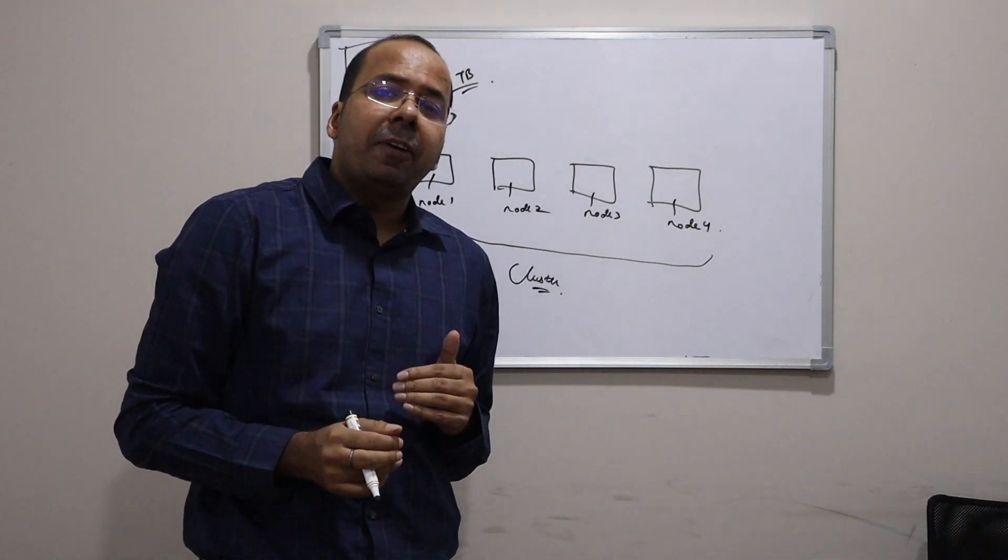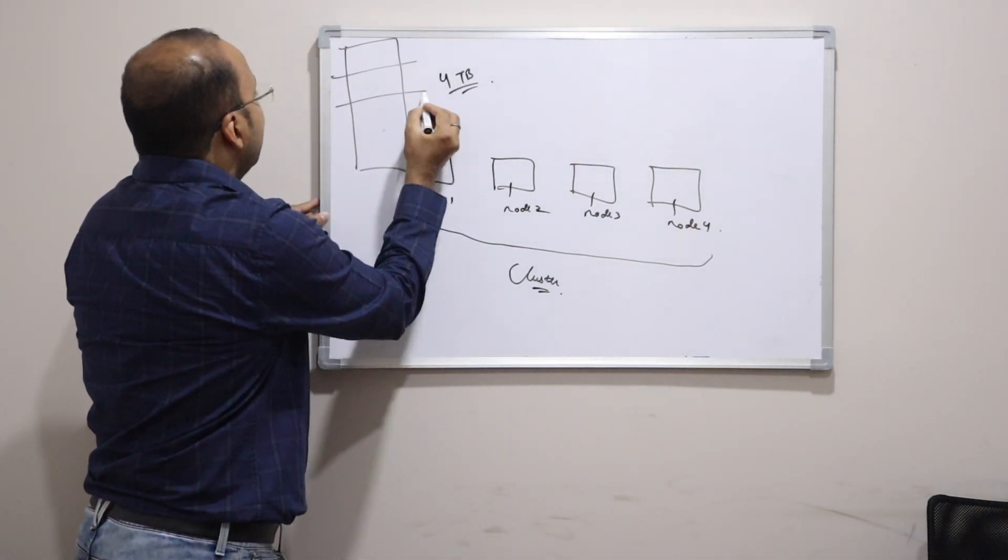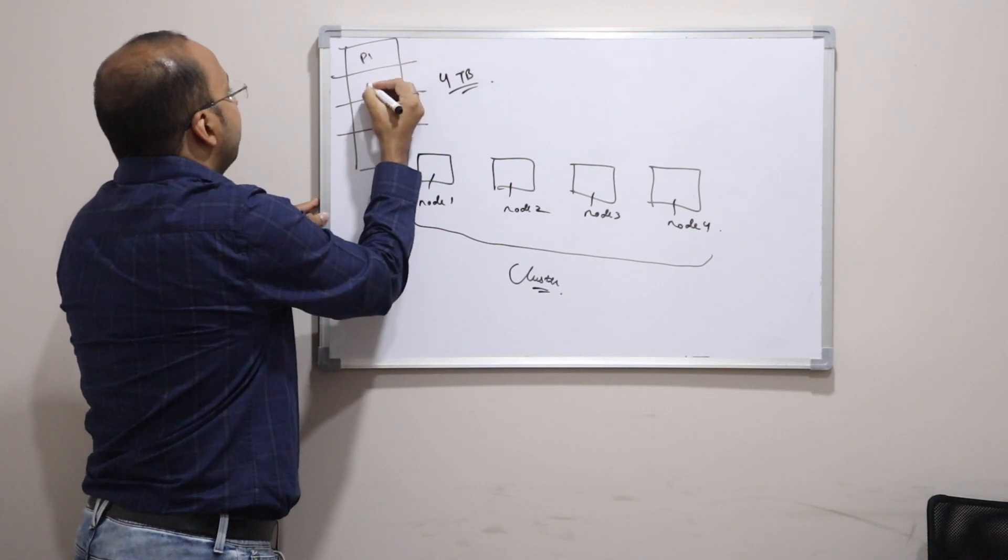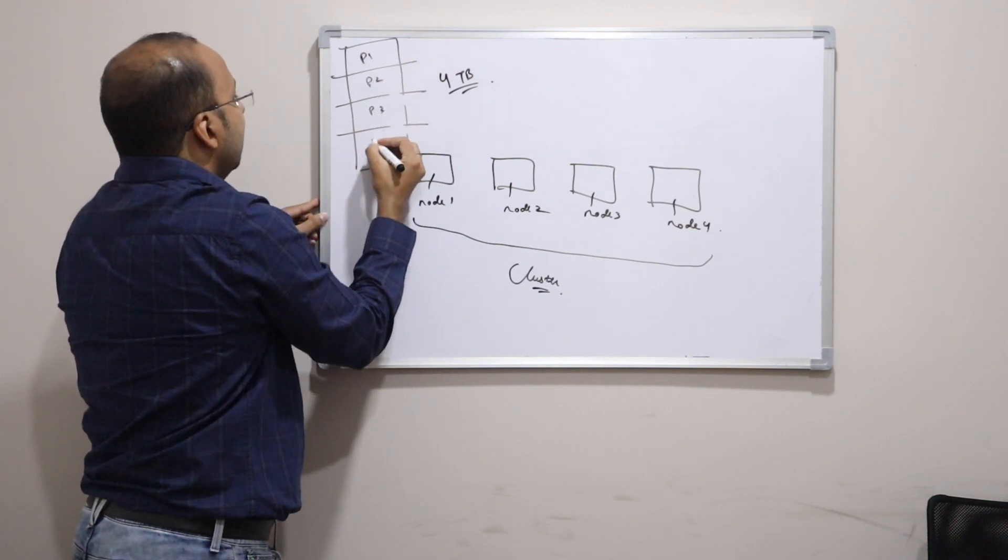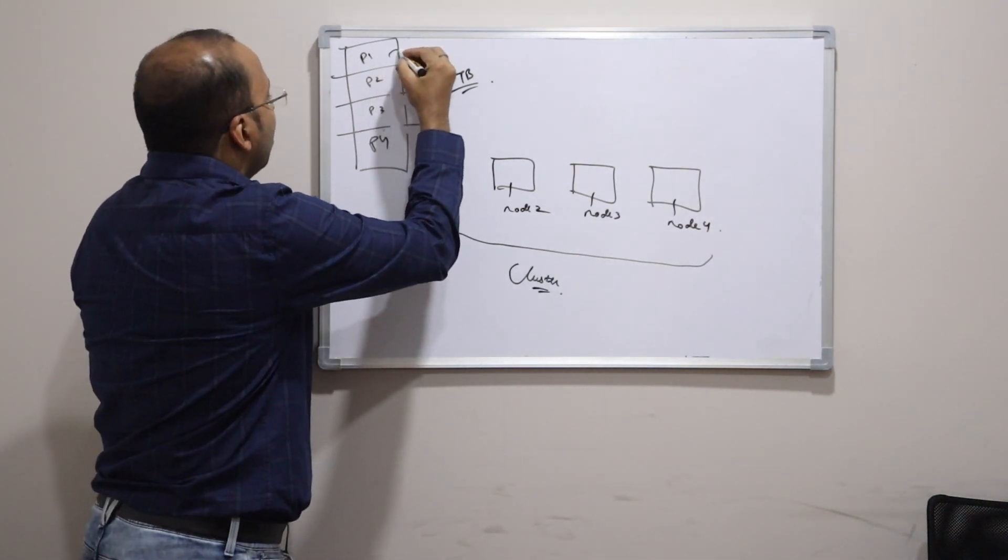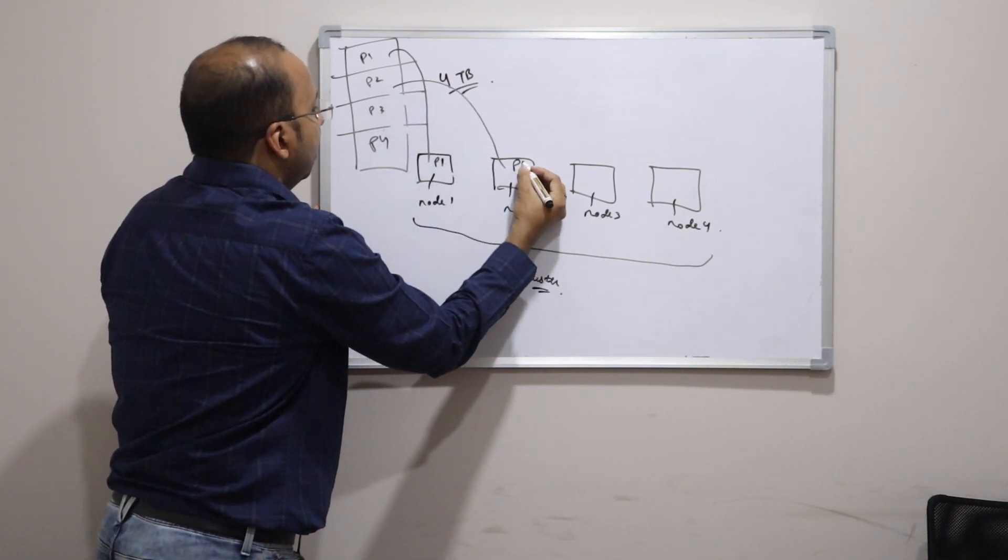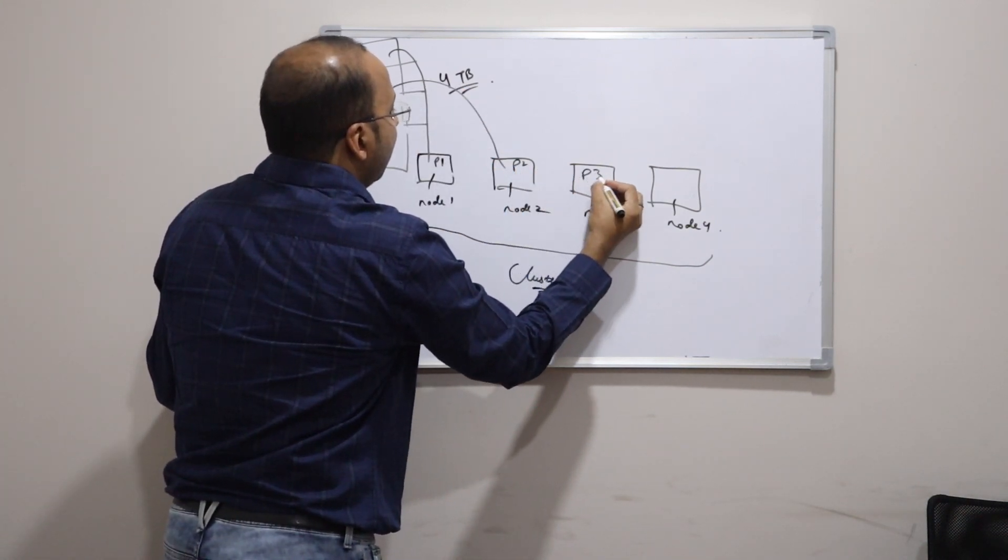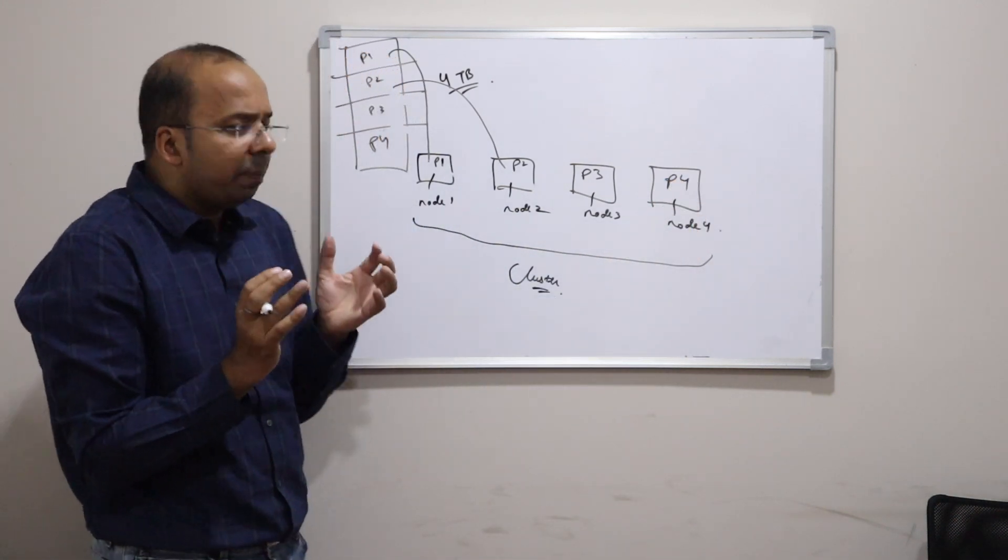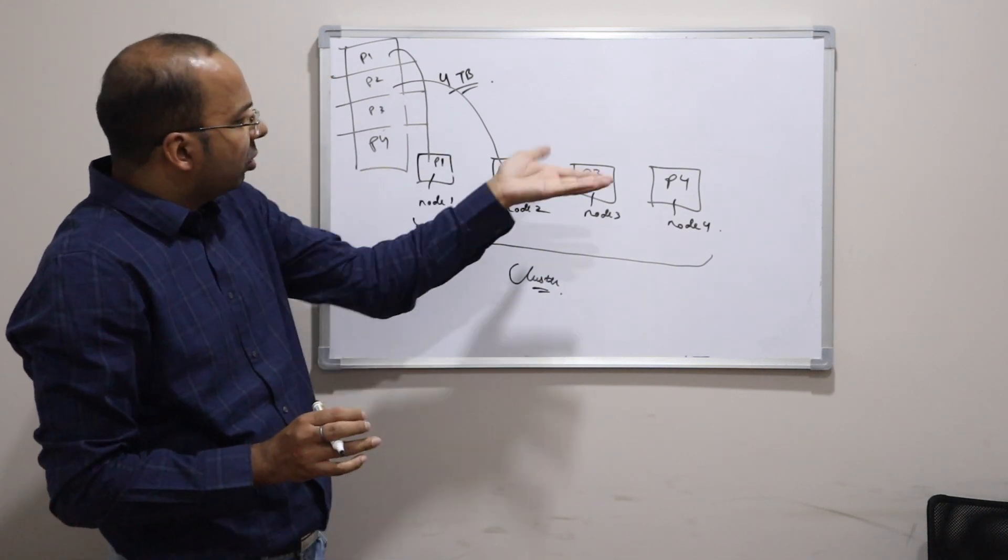you remember I have a 4 TB file which is pretty big. Now can't I divide the file into smaller parts like this. First part, second part, third part and fourth part. That means part 1, part 2, part 3 and part 4. And I will then store this part here. That means part 1 here, part 2 here, part 3 here and part 4 here. That means I have broken the big file into small small chunks. And given each of the chunks to separate machines.